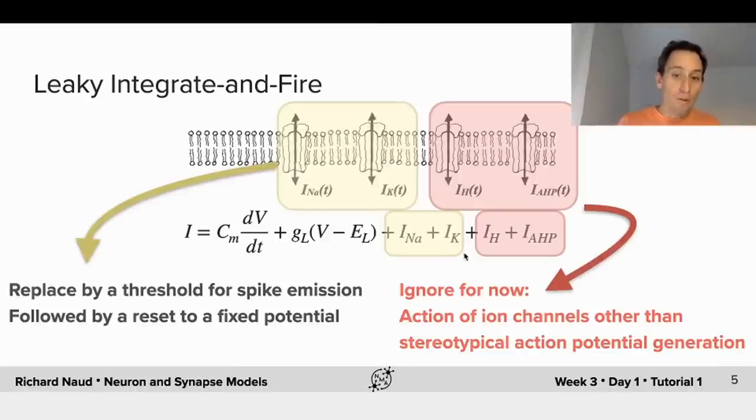So, we're going to replace those two currents by an external threshold followed by a reset. And this is the leaky integrate and fire model.